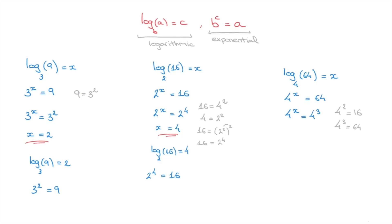Now that both sides of the equation are written as powers of the same number, we can go ahead and equate the exponents. So that would be x equals to 3. And that's the answer. In other words, log base 4 of 64 is equal to 3, or in exponential form, 4 to the power of 3 equals to 64. And there we have it — that's how we can calculate logarithms using the exponential form. And that's it for this tutorial.